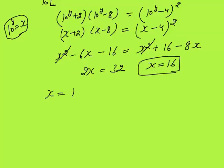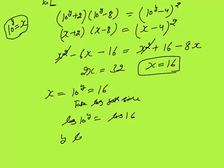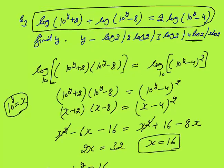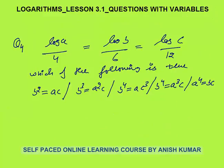Since x = 10^y = 16, take log of both sides: y log 10 = log 16. Since log 10 = 1, y = log 16 = log(2⁴) = 4 log 2. So y = 4 log 2, which is option 4, the final answer.